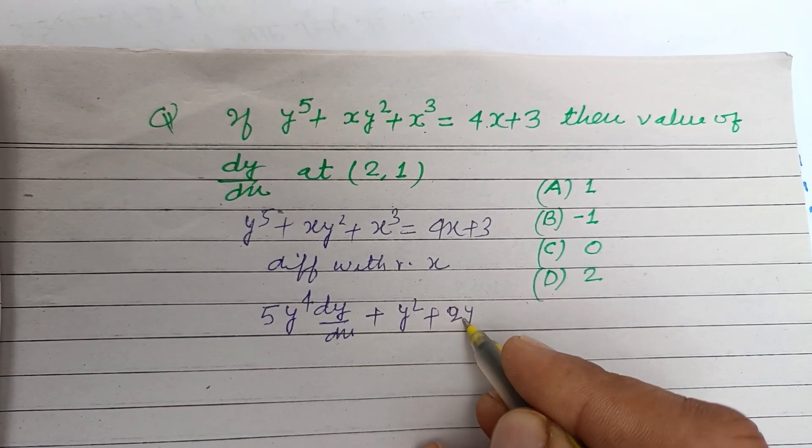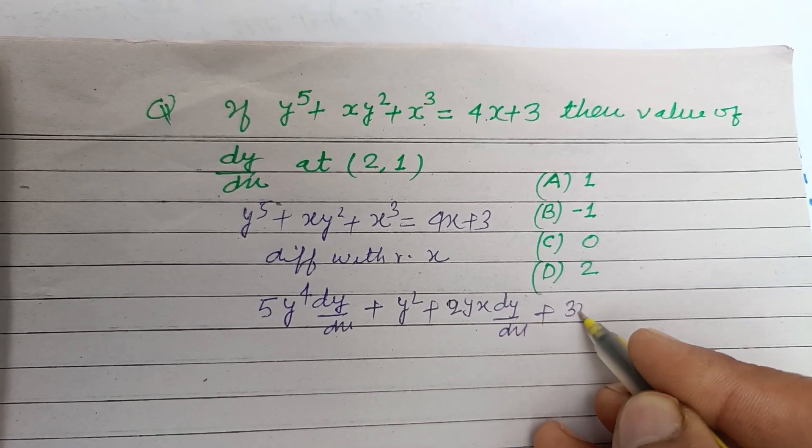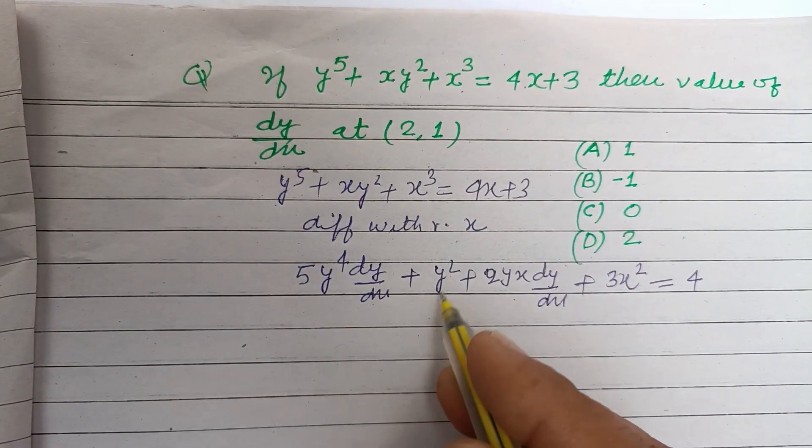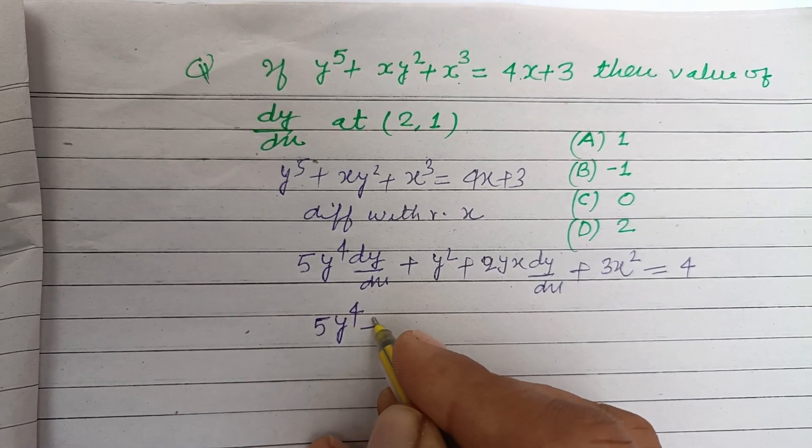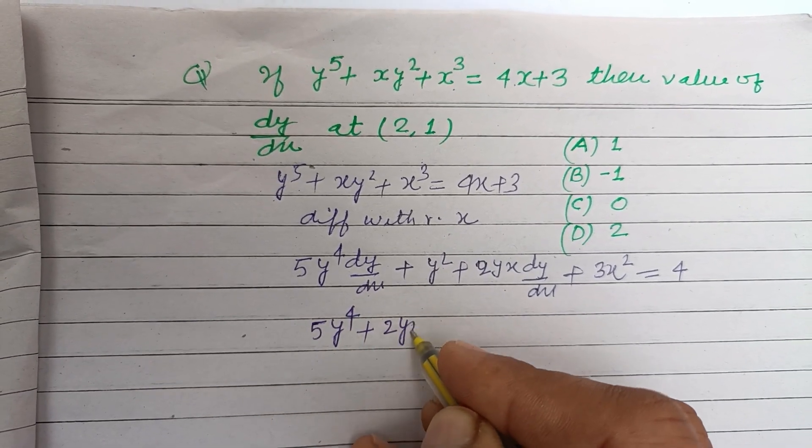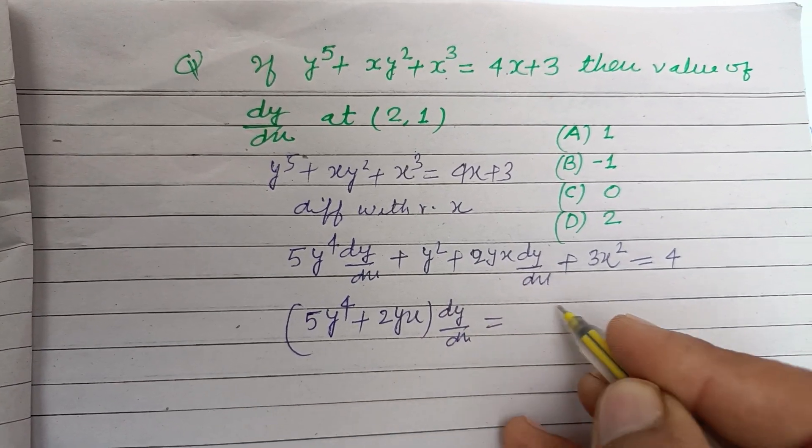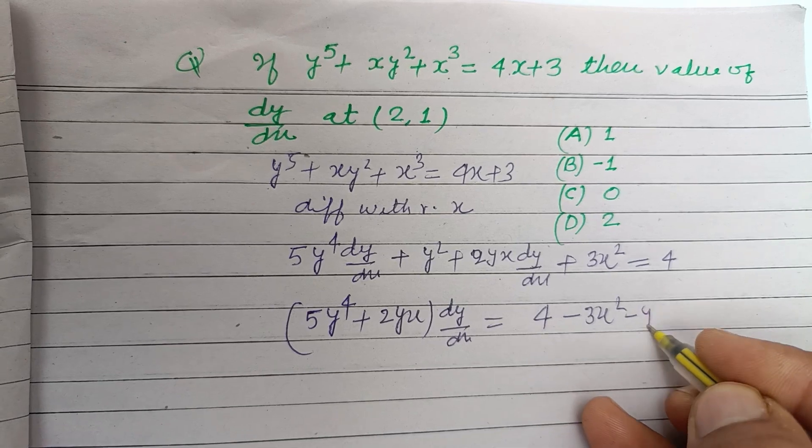Here 2yx times dy by dx plus y square, plus 3x square equals 4. Now taking dy by dx common, so this is 5y to the power 4 plus 2yx times dy by dx equals 4 minus 3x square minus y square.